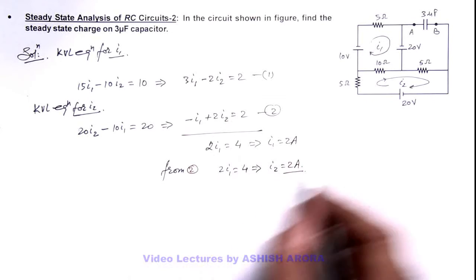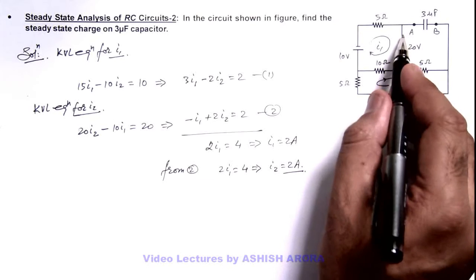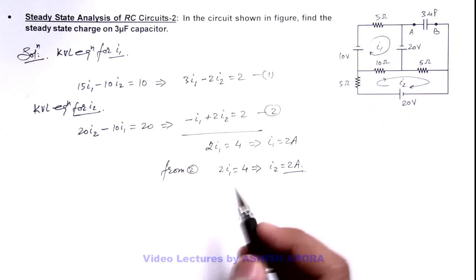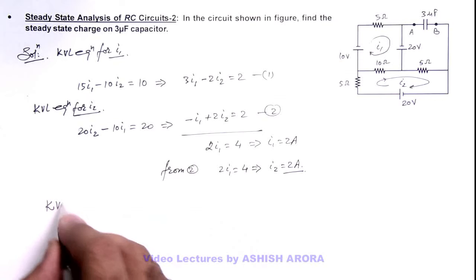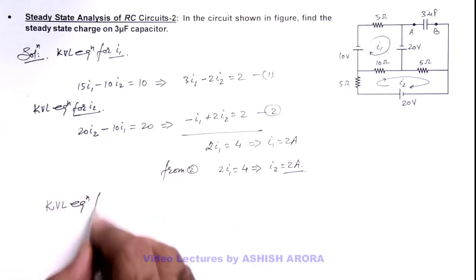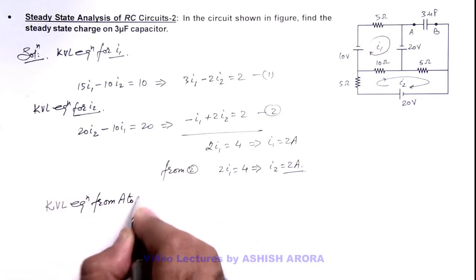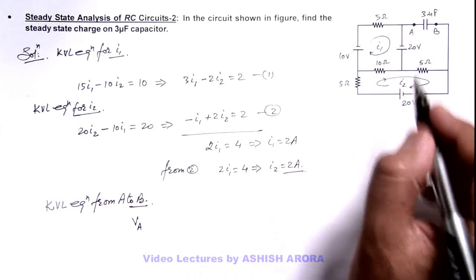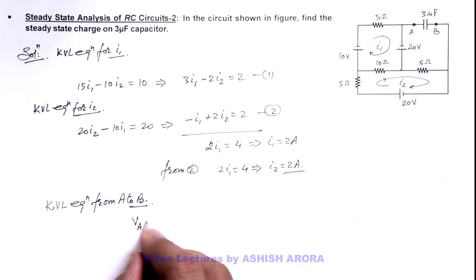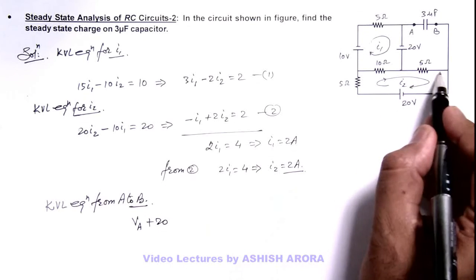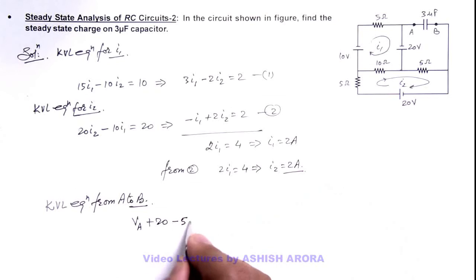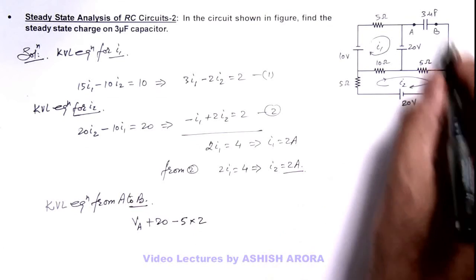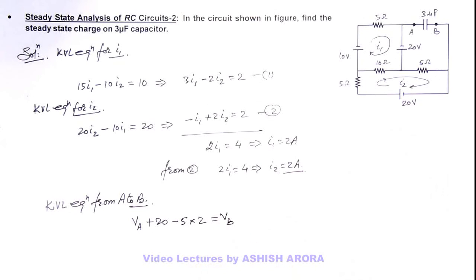Now that we have the value of current I2, we can find the potential difference across terminals A and B by writing the KVL equation from A to B. The potential at point A is V_A, then moving through the 20V source it becomes plus 20, and moving further it is minus 5 times I2 which is 2 ampere. This equals the potential at point B, V_B. Simplifying: V_B minus V_A equals 20 minus 10, which is 10 volts.